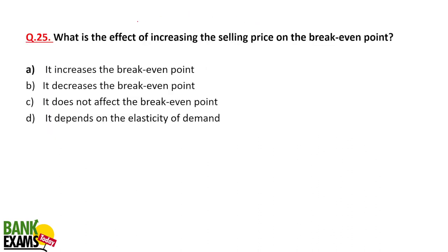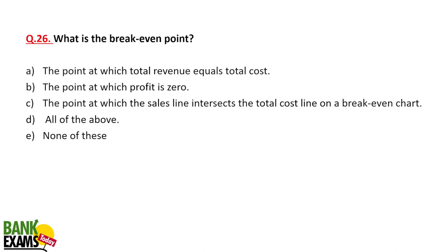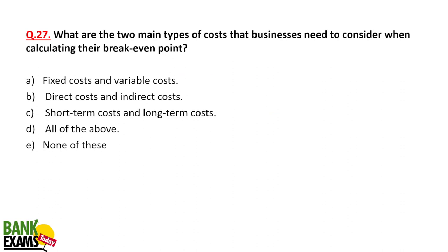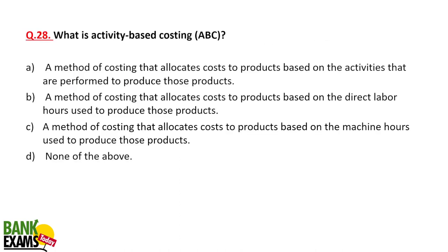What is the effect of increasing the sales price on the break-even point? It decreases the break-even point, because your revenue per unit increases. The formula for break-even point is: Total Fixed Cost ÷ Contribution Margin Per Unit. The two main types of costs businesses consider when calculating break-even point are fixed cost and variable cost. If sales are below break-even point there is a loss; if above, there is a profit.